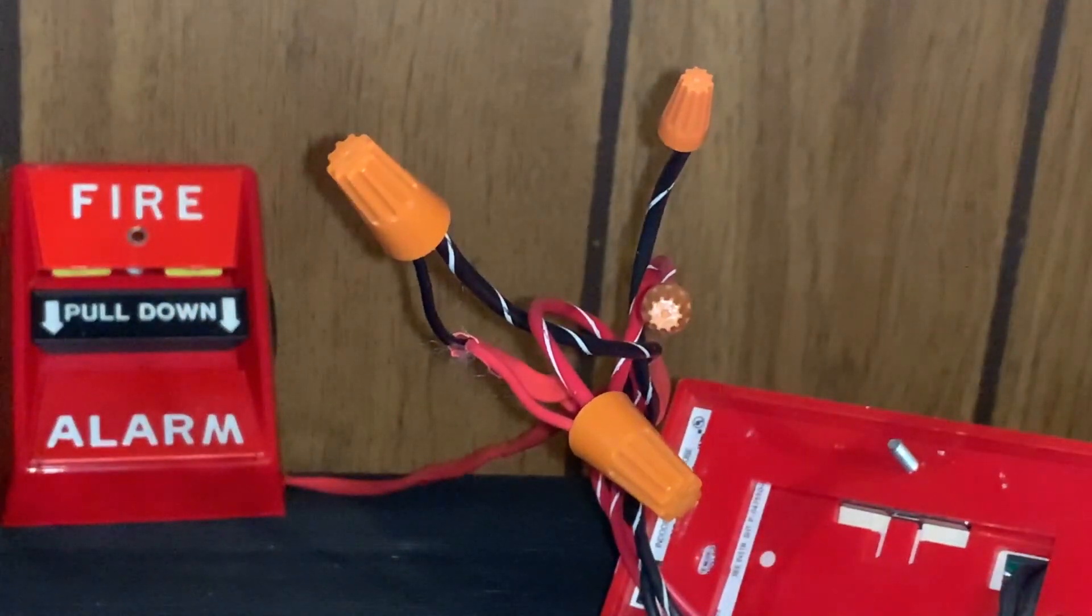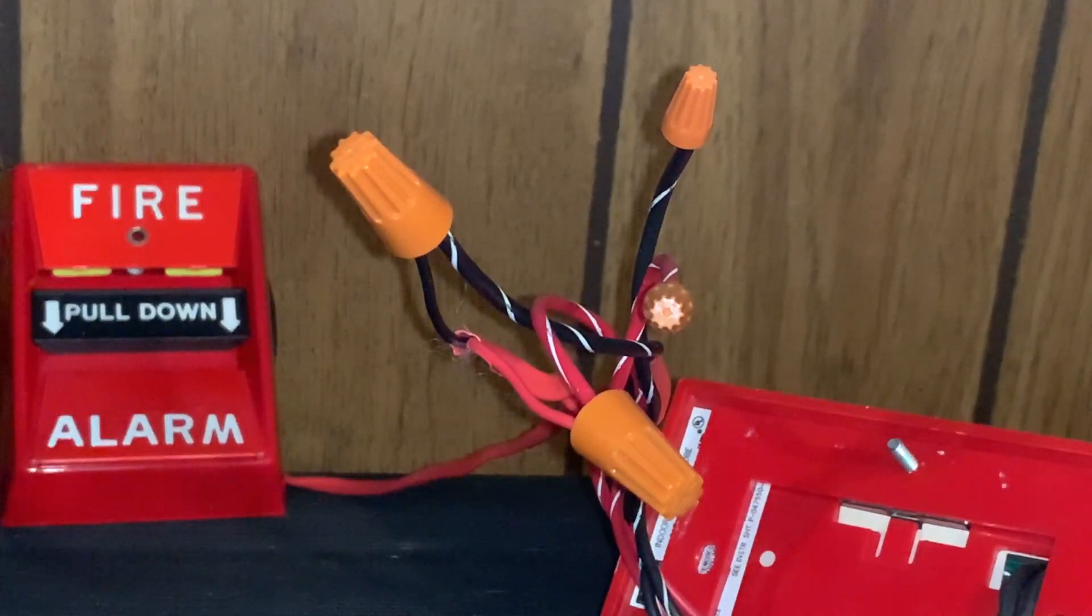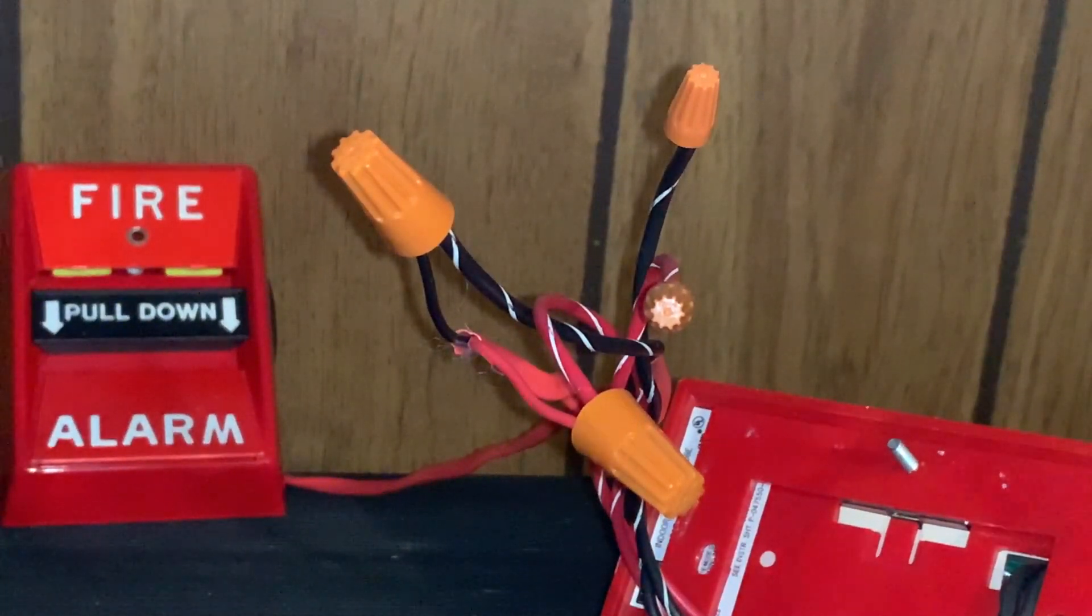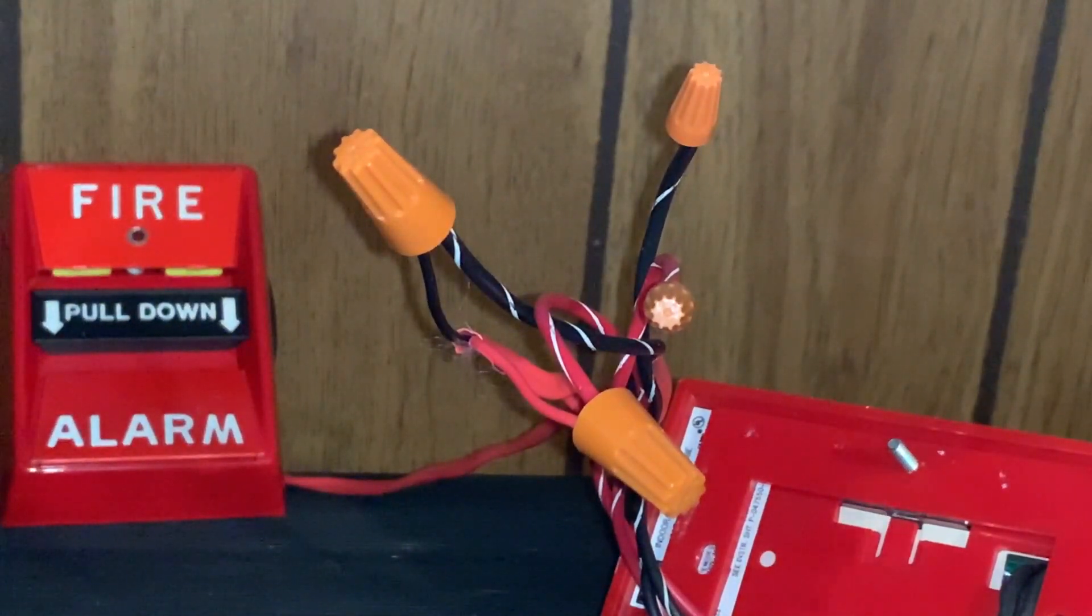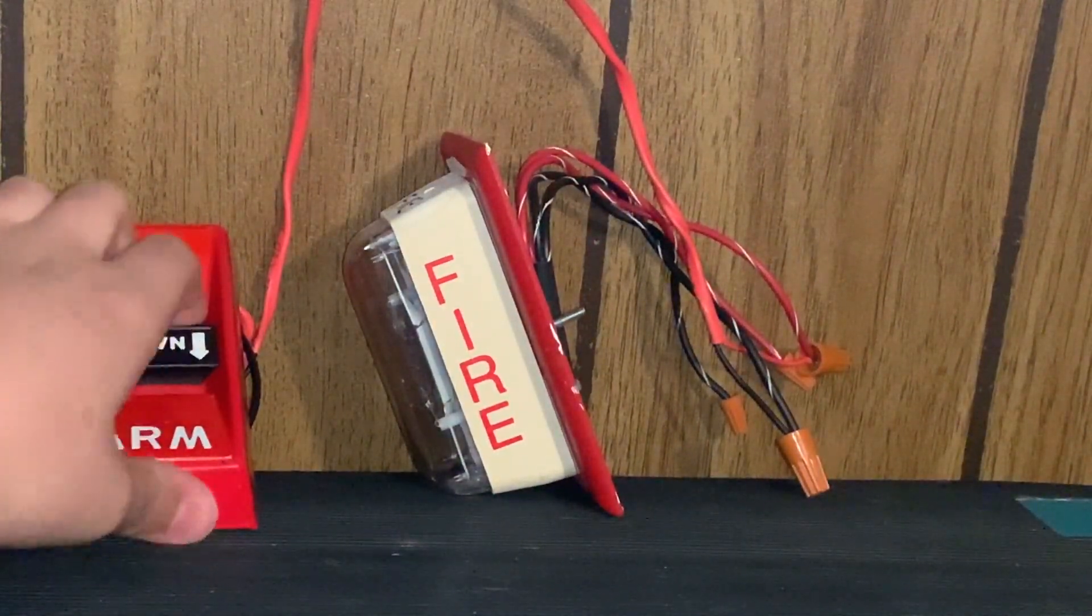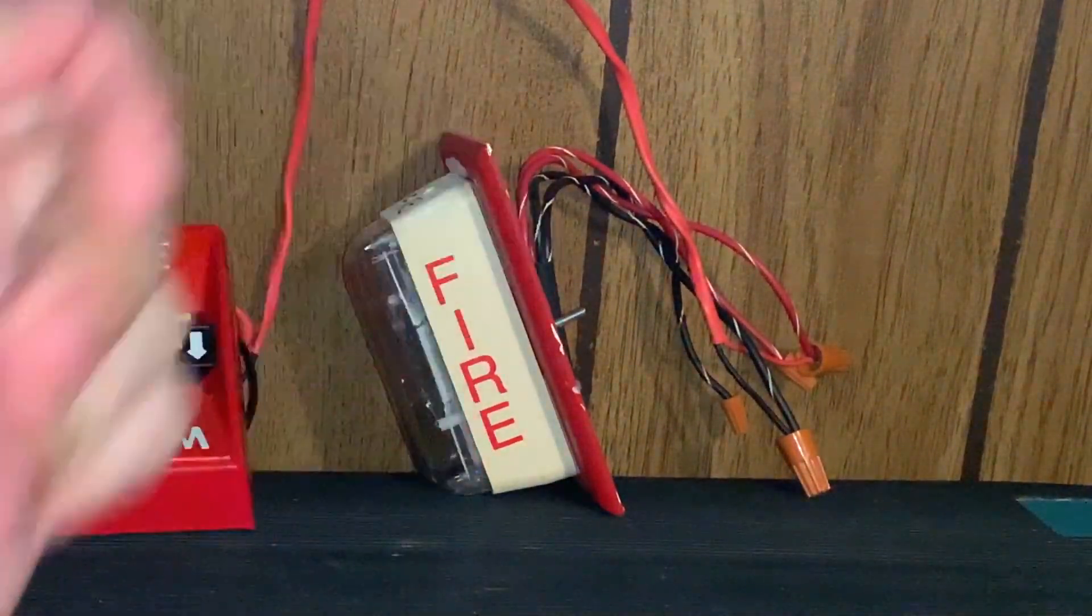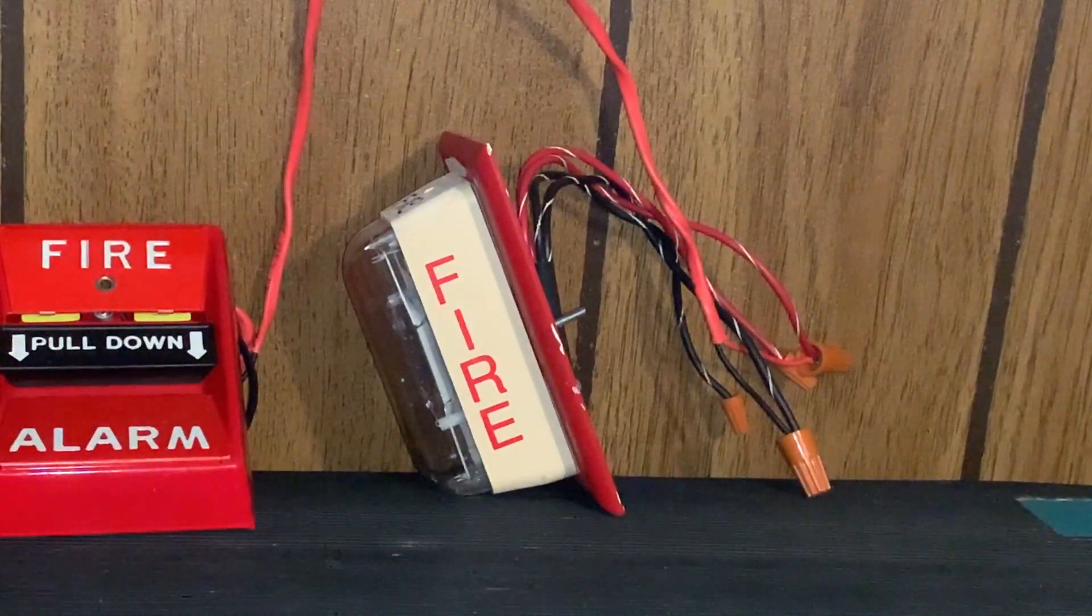And of course these are capped off. They're also capped off on the other side over here with the wire terminals. Of course you could use wire nuts over there as well. Now like I said, this is just for demonstration, but if I did pull it, then the strobe would go off and there would be no issues.